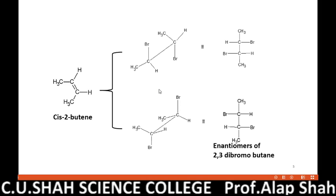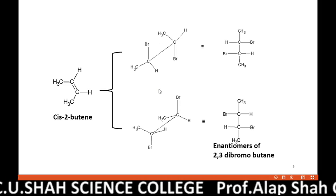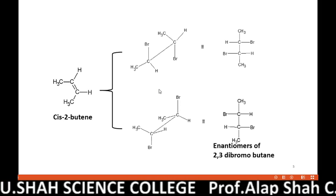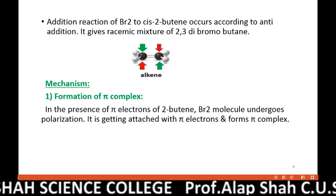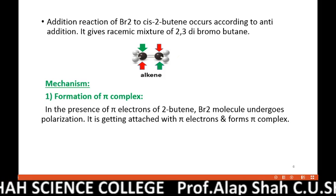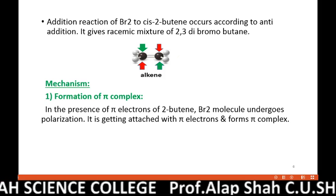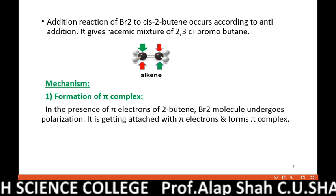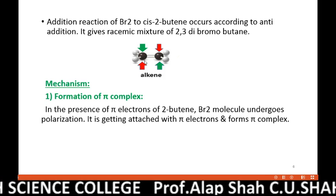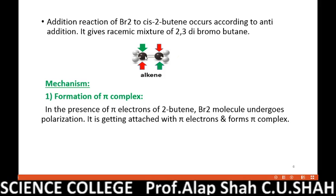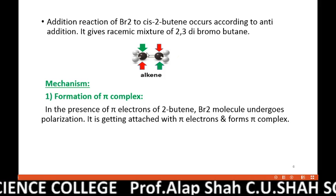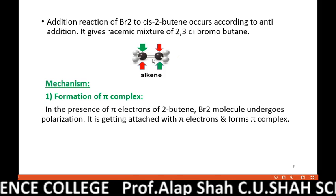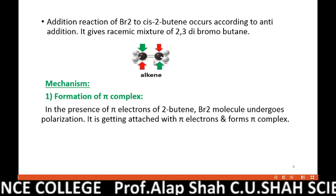So this is the reaction, but our question is to discuss its mechanism. Let us now discuss the mechanism. We have already established that both cis-2-butene and trans-2-butene bromination follow anti-addition — it means both bromine atoms are added to the double bond from opposite sides.